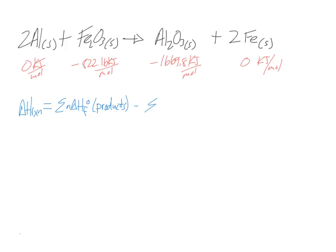This is a fairly straightforward and simple calculation because there are only two terms. You'll have the heat of formation of aluminum minus the heat of formation of the iron oxide. You should get negative 847.6 kilojoules.